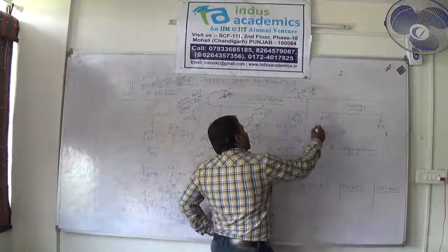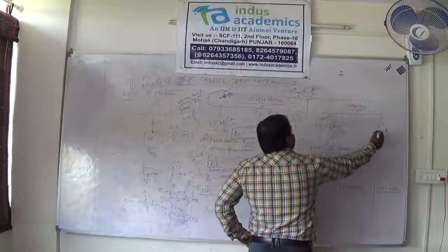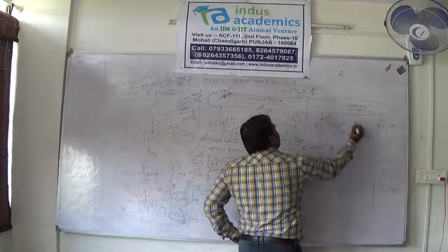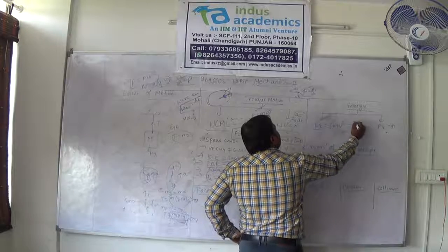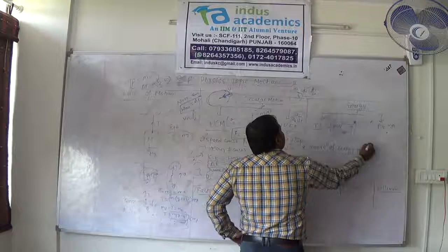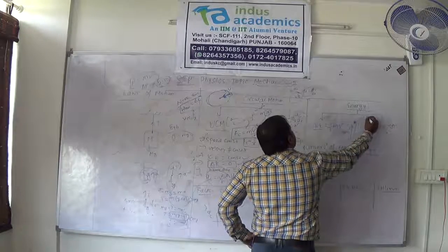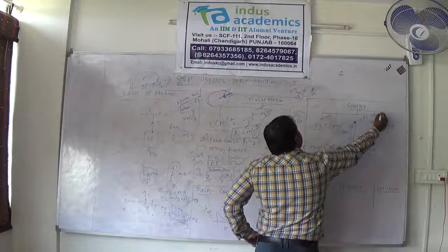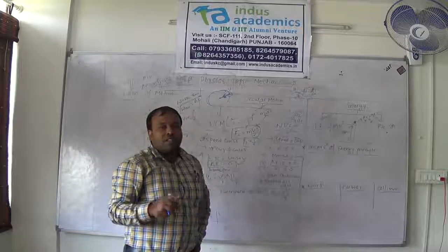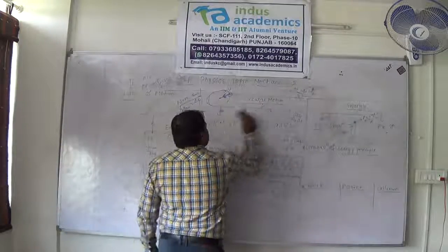Coming to the energy part. Kinetic energy is half M times speed squared; potential energy is mgh. Example: a body at position A, 10 meters above the ground, is at rest. Potential energy = mgh = 10mg; kinetic energy = 0. Total mechanical energy at position A = 10mg.